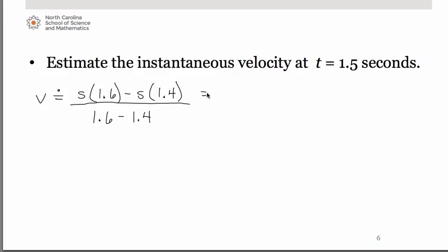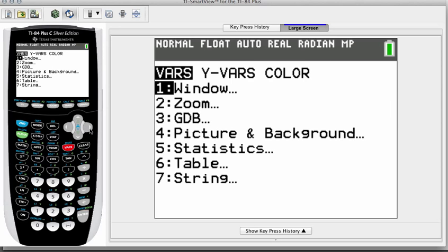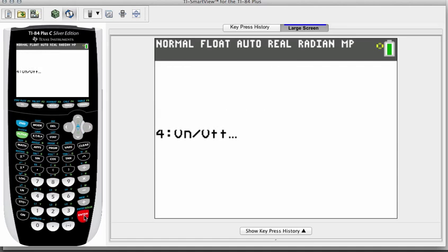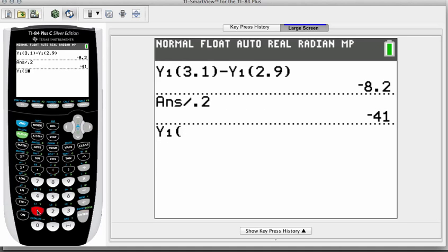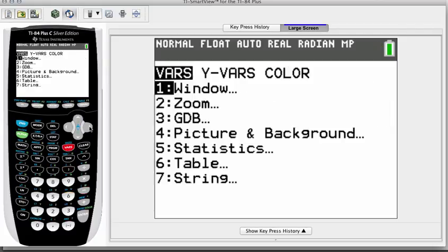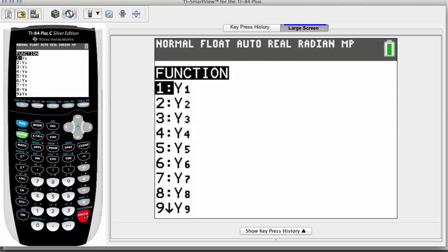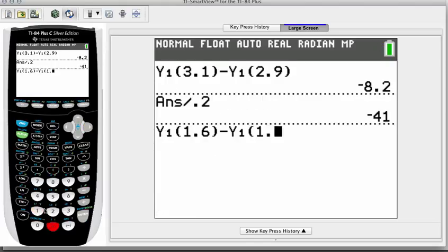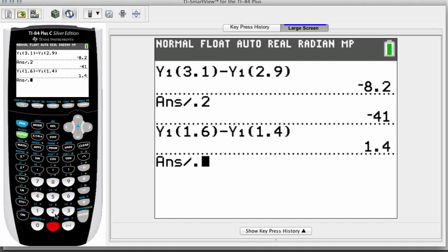So once again we're going to let the calculator do the number crunching for us. So we're going to do that vars and across the top to y vars. And we're going to have the calculator evaluate the function at 1.6 minus at 1.4. So once again this is the numerator from our slope calculation. And we need to divide that by .2 which is the 1.6 minus 1.4. And we get 7.